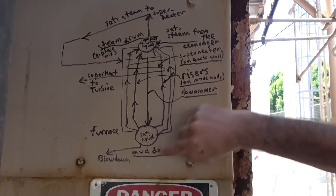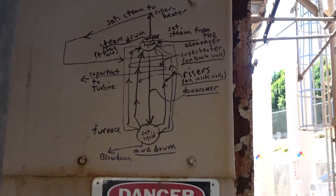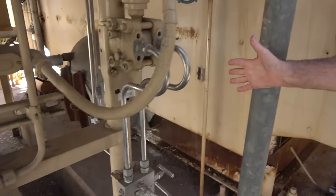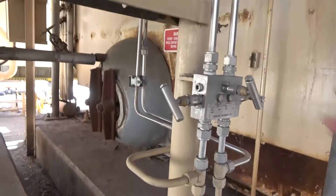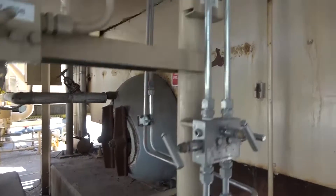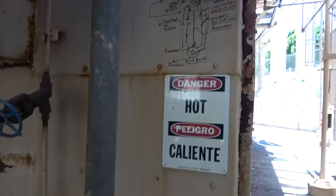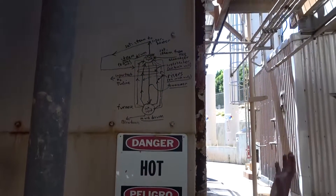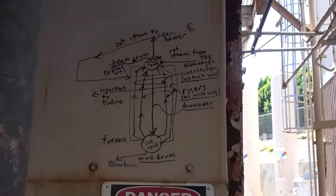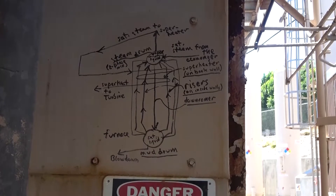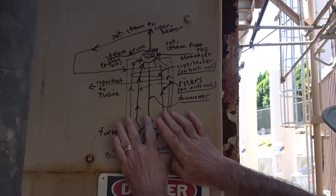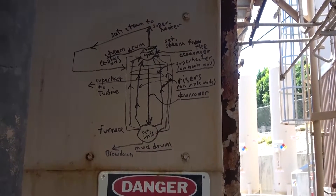That saturated liquid goes all the way down to a drum we call the mud drum. We can see the end of the mud drum if we scan over to the left — it's about three feet in diameter and runs the full length of the furnace. Within the mud drum is just saturated liquid. From there, the saturated liquid is directed through tubes that rise up through the inside walls of the furnace, called risers or riser tubes. That's where the heat transfer takes place — there are literally hundreds, if not thousands, of riser tubes.